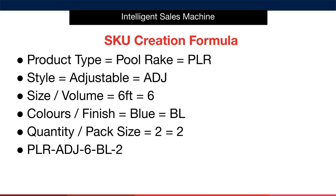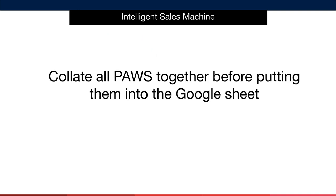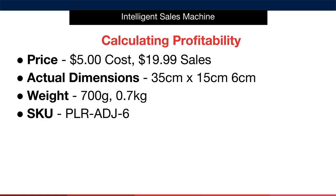Now that you understand everything you require, simply collate all PAUSE elements together before putting them into the Google Sheet. You will need each one of them to complete this part. All that's left is to take a look at how to do this in the Google Sheet using all the PAUSE data we've collected. Let's take a look at how to do it.